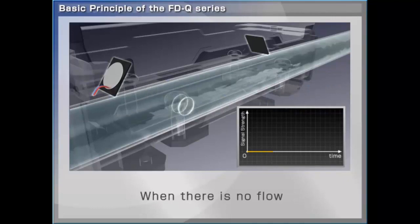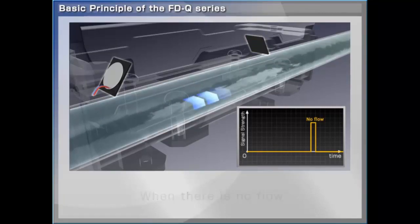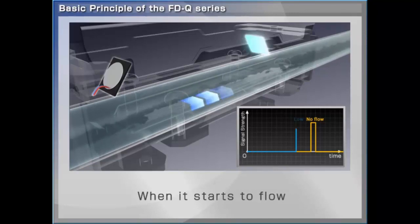When there is no flow running through the pipe, the signal sent from the transmitter arrives at the receiver after a certain period of time. As liquid begins to flow, the signal is again referenced.